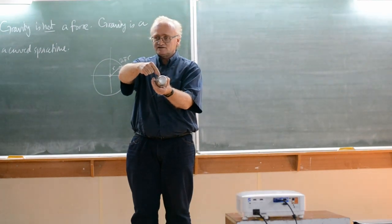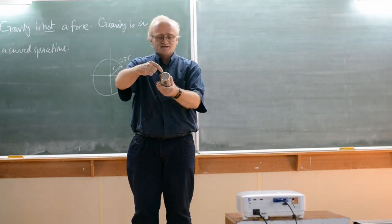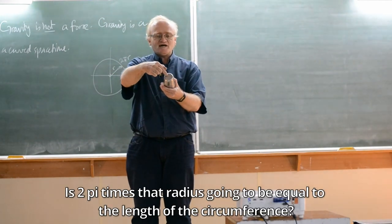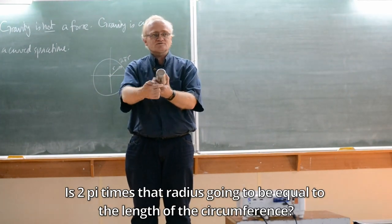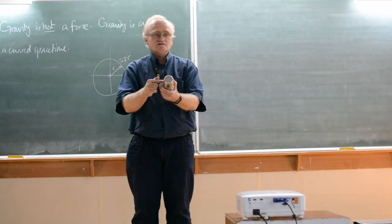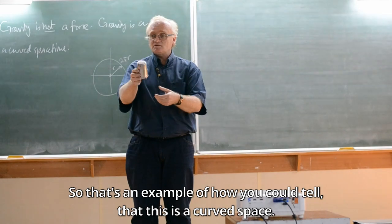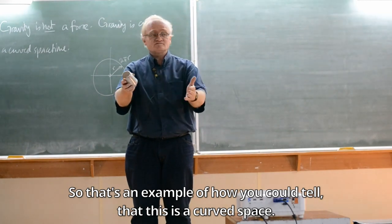What's the radius? The radius is that distance over there, all the way to the edge of the circle. Everyone agree? Pretty big radius. Then I can measure the length of the circumference. Is 2π times that radius going to be equal to the length of the circumference? It's going to be a lot more, right? So that's an example of how you could tell that this is a curved space.